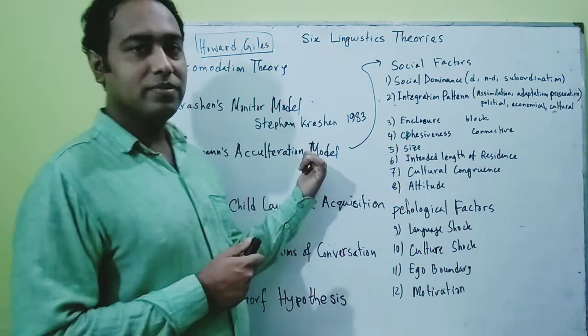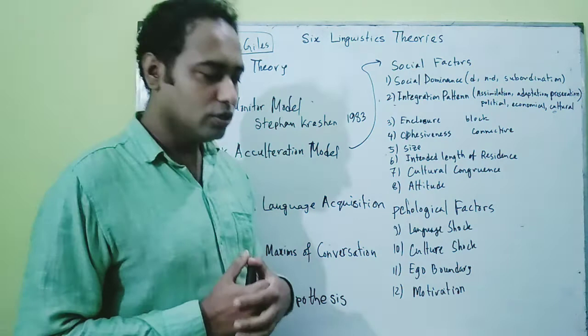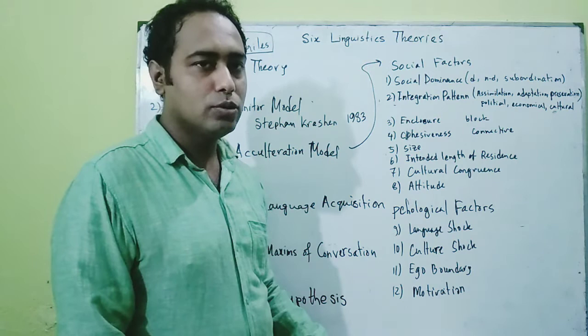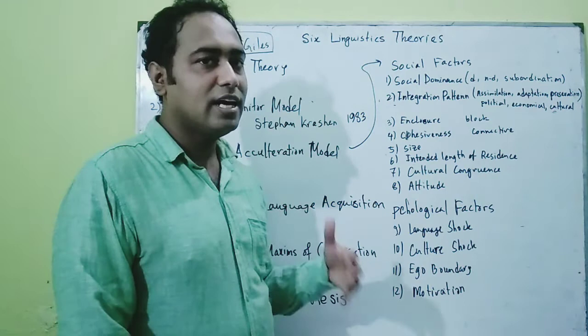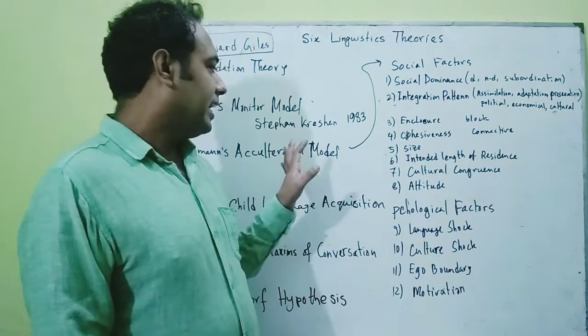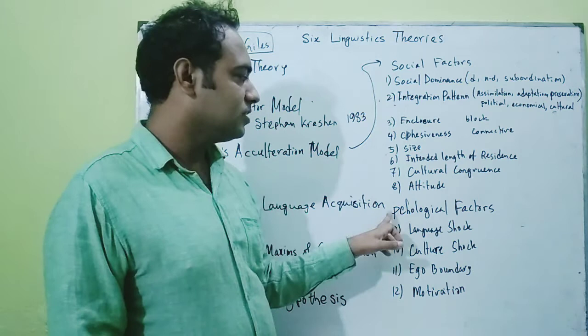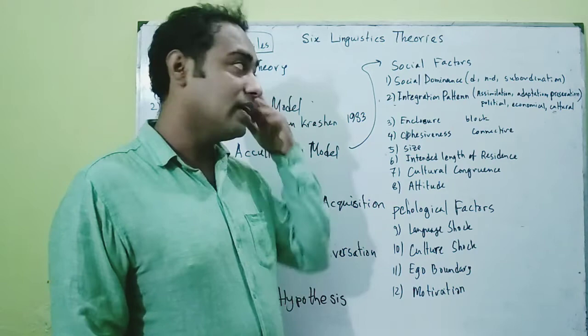I'm talking about John Schumann's acculturation model. John Schumann has done research on some Spanish learners. He was teaching some students, but a working-class Costa Rican named Alberto was unsuccessful in learning, so he conducted a 10-month-long research on Alberto. After studying his failure in learning English, he came to 12 factors — eight social factors and four psychological factors — which were responsible for his failure.